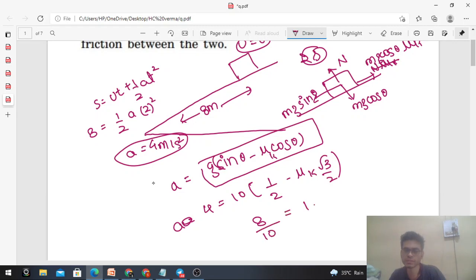So from here you can easily find out the value of mu_k. That is 8 upon 10, that should be equal to 1 minus mu_k into root 3. So kitna hai? 0.2, that should be equal to root 3 into mu_k, right? To yaha se mu_k ka value hai 0.2 divided by root 3.